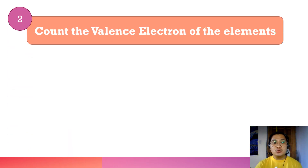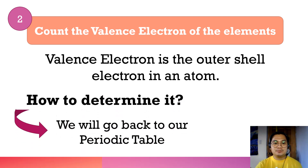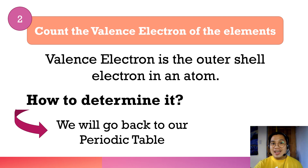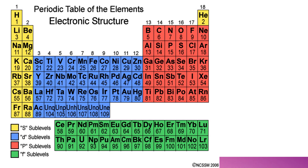Step number two is to count the valence electrons of the elements. Valence electrons are the outer shell electrons in an atom. To determine this, we refer to the periodic table. You need to know the group number of each element. The group number on the periodic table is key to finding the valence electron count.